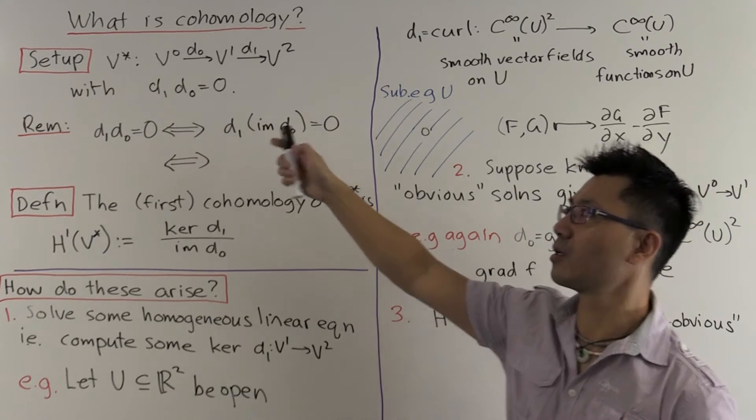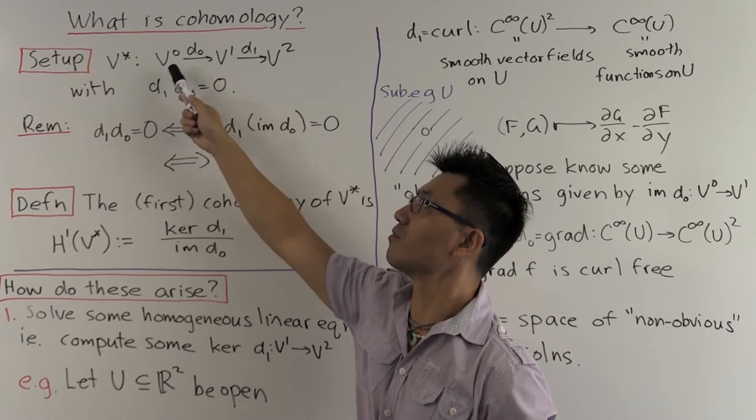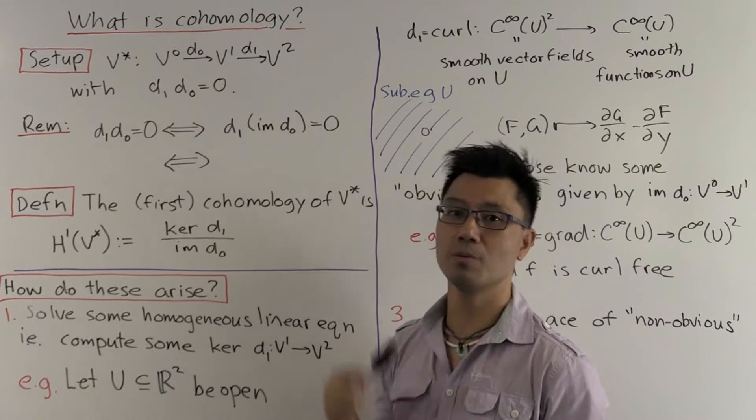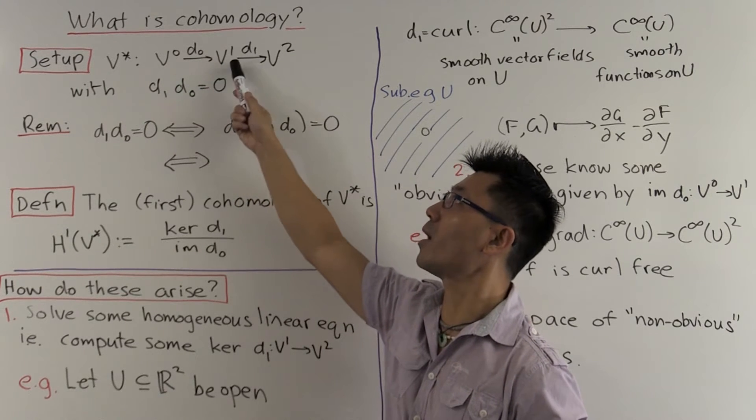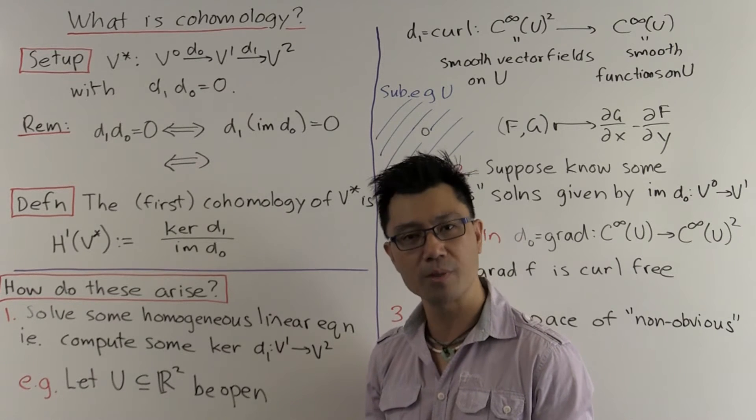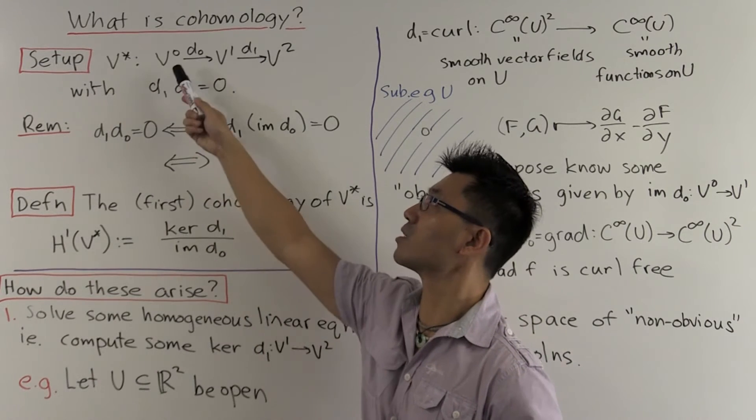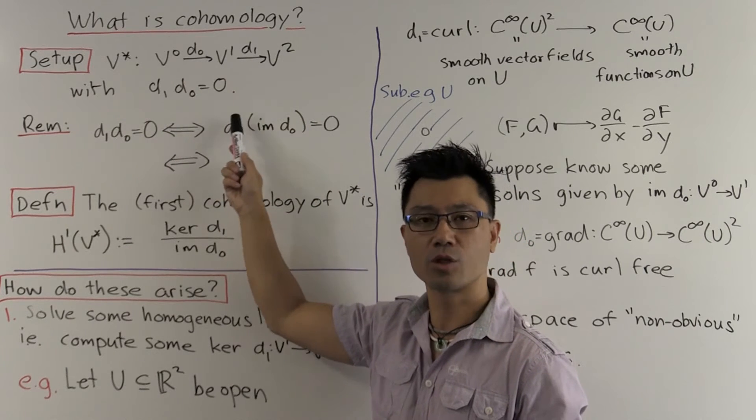So our setup today consists of three vector spaces V0, V1, and V2, and we have two linear maps between them, D0 and D1. And we look at the special situation where the composition is zero. That means if we do D0 and then D1, the composite is zero.